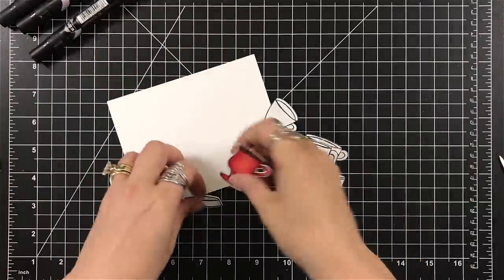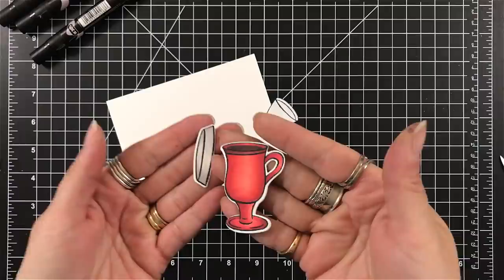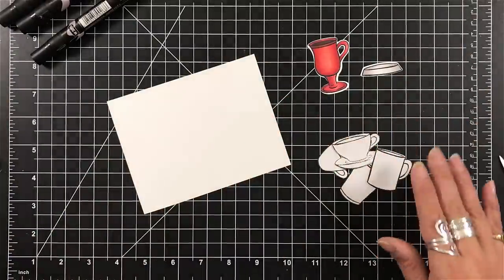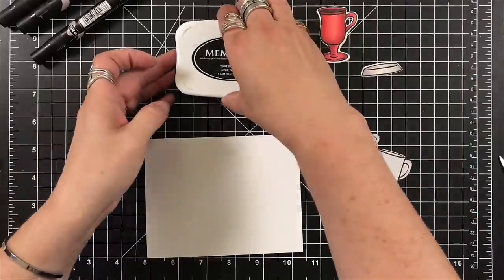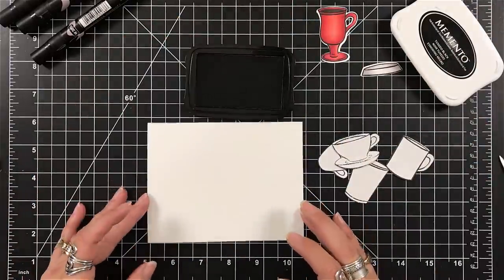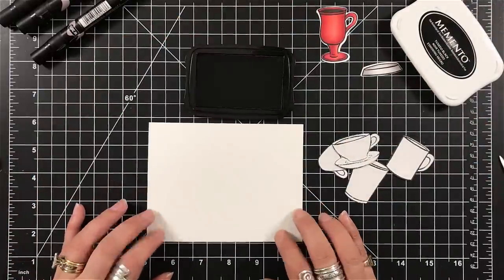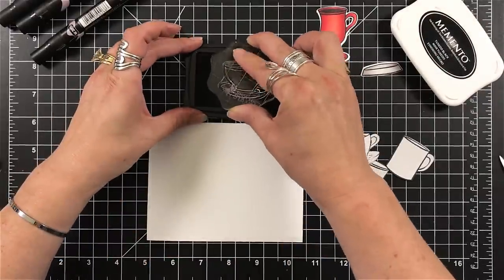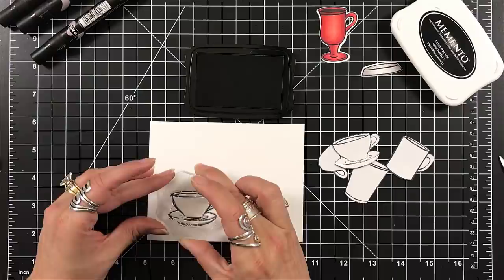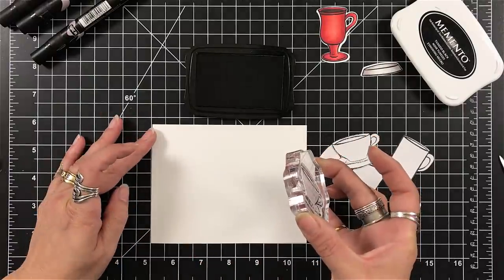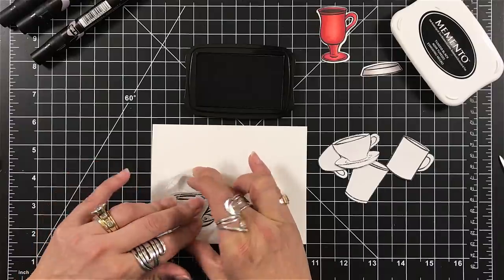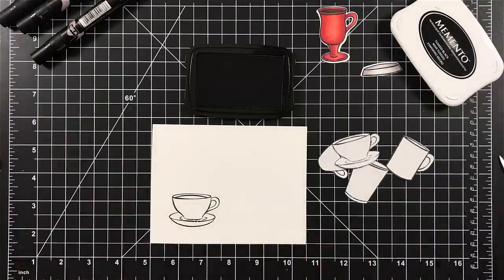In all of the cards I did do some of the cutting and the coloring and the fussy cutting prior to these videos just to save some time. So you can see I've already colored the fancy mug and I used my Prismacolor alcohol markers. I've pulled out my Memento black ink and I'm going to do some stamping and masking.